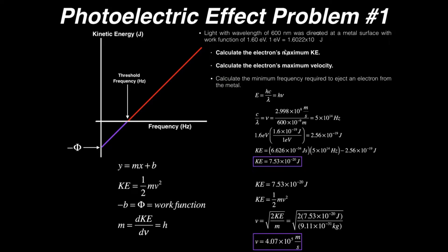First we're asked to calculate the electron maximum kinetic energy. We have this relationship: energy is equal to h times c over lambda — Planck's constant times the speed of light over the wavelength — which is also equal to Planck's constant times the frequency. We can simplify to: speed of light over the wavelength is equal to the frequency.